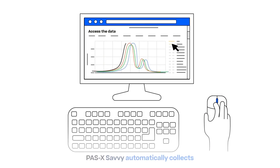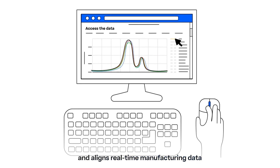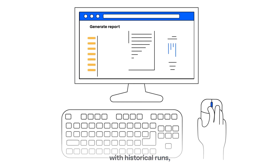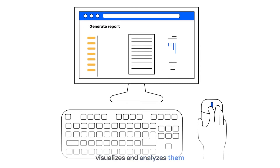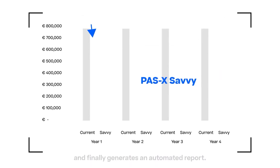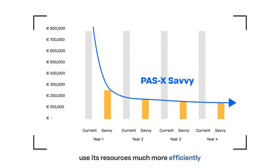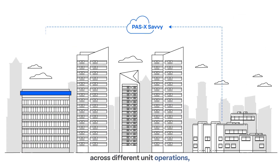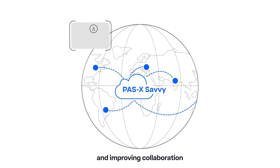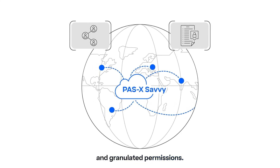POSEX Savvy automatically collects and aligns real-time manufacturing data with historical runs, visualizes and analyzes them, and finally generates an automated report. POSEX Savvy helps your company use its resources much more efficiently by connecting data across different unit operations, departments, and sites, and improving collaboration through sharing options and granulated permissions.